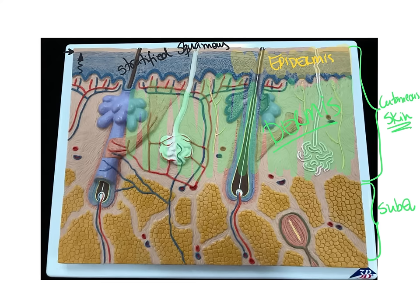Melanocytes extend their projections into the stratum spinosum and are responsible for melanin production, giving our skin its specific color. Another cell found in the epidermis is the Merkel cell, also located in the stratum basale in between the keratinocytes. Merkel cells are responsible for allowing us to sense light touch. When someone touches the surface of our skin, we can sense it because of Merkel cells, which are associated with Merkel discs connected to a sensory neuron carrying information toward the central nervous system.